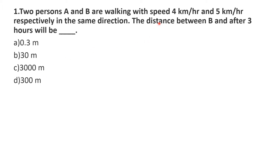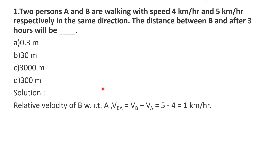Here you have to find the distance from person B to person A after a time of 3 hours. After 3 hours, person B will be ahead of person A. The speed of person A and B are given as 4 km per hour and 5 km per hour. First, you have to find the relative velocity of B with respect to A, that is VBA which is equal to VB minus VA. So 5 minus 4 gives 1 km per hour.